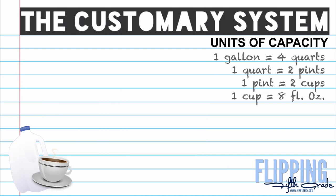Now finally we're going to talk about the units of capacity, which is probably the most difficult one because it's one we're not quite used to. In the units of capacity: one gallon equals four quarts, one quart equals two pints, one pint equals two cups, and one cup equals eight fluid ounces — much different than regular ounces.